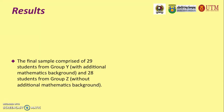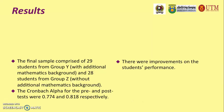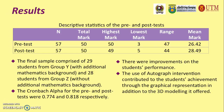A paired t-test was used to compare the results between the tests to examine whether there were any differences in students' overall achievements through the intervention lessons using Autograph. The Cronbach's Alpha for the pre- and post-tests were 0.774 and 0.818 respectively. There were improvements in student performance as shown in the table, indicating that the use of Autograph intervention contributed to students' achievement through graphical representation in addition to the three-dimension modeling it offered.